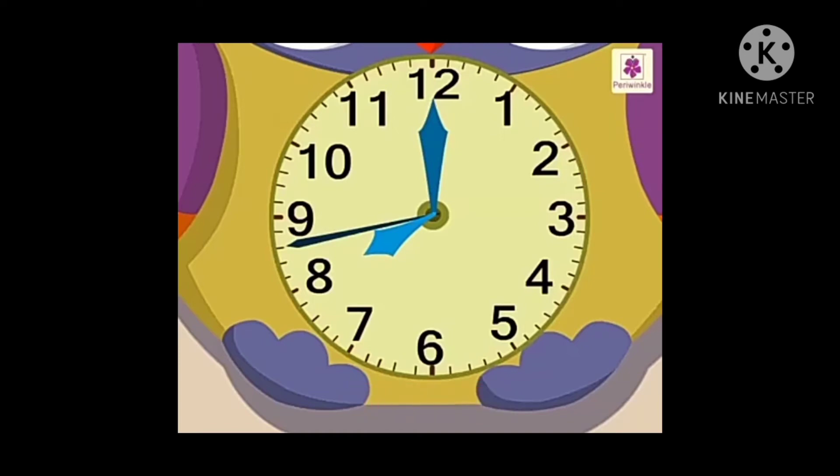Now let's look at a few more examples to understand it in a better way. Here the hour hand is approaching 2 and the minute hand is on 9. It is quarter to 2. We write it as 1:45.